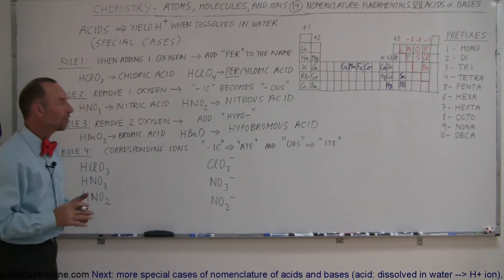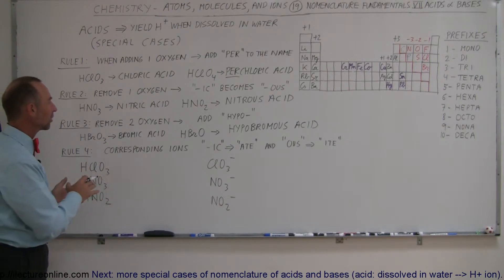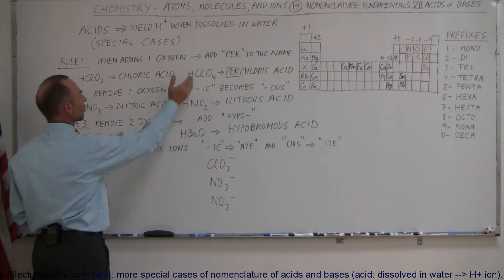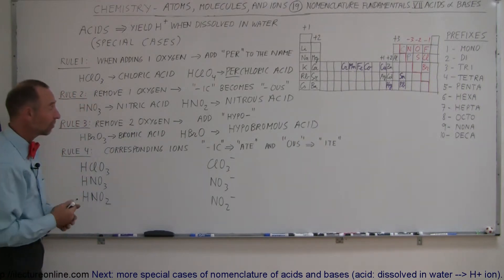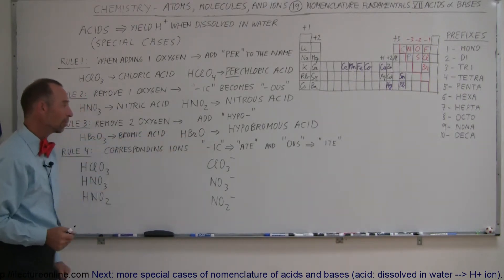So those are the ways in which we change the name of the acid for something where either an oxygen is added or subtracted, or in case there's two oxygens subtracted, and we still find ourselves with a compound that forms an acid.